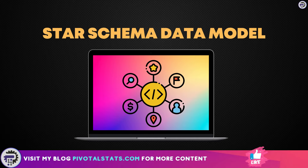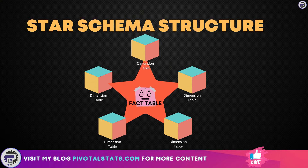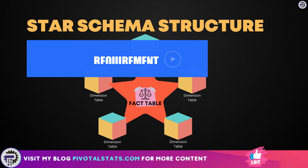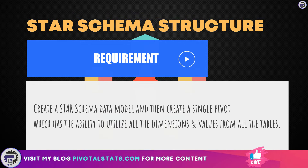At the center of the schema you would find a fact table, which contains measurable transactional values. The fact table is actually connected with multiple dimension tables, which contain columns with specific business entities or attributes.